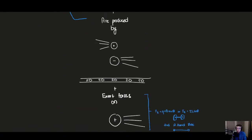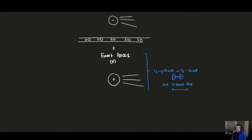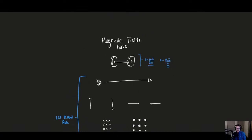Magnetic fields are produced by moving charges — anytime a charge moves, it produces a magnetic field. That's why when talking about strength, we discuss it in the context of a wire, whether circular or straight. They also exert forces on other moving charges, and we can describe both strength and direction. This is where we have the plug-and-chug type things with QVB sine theta, as well as the second right-hand rule.